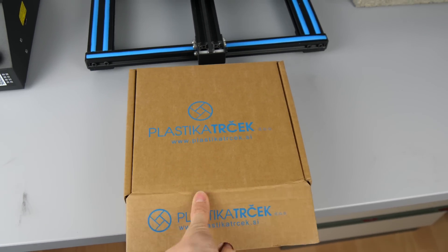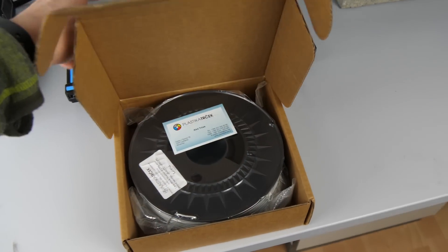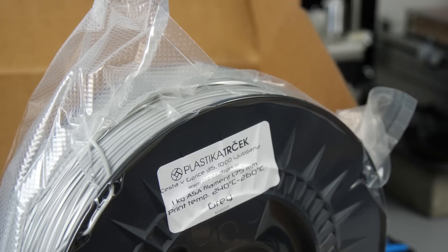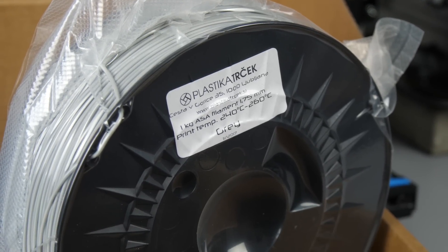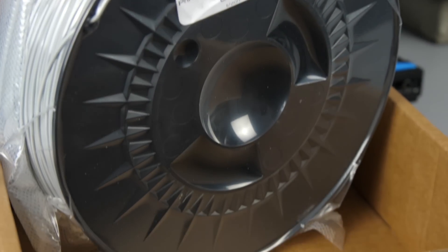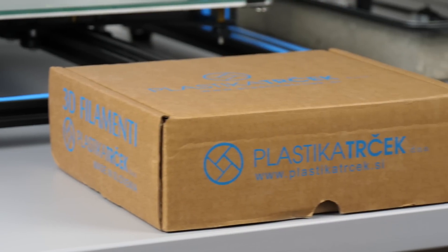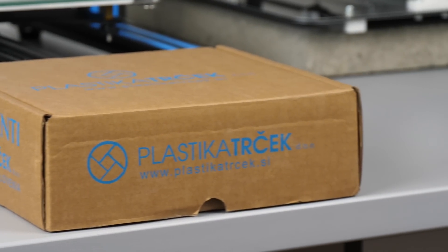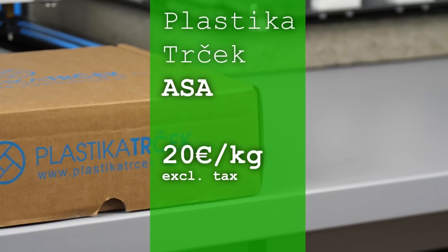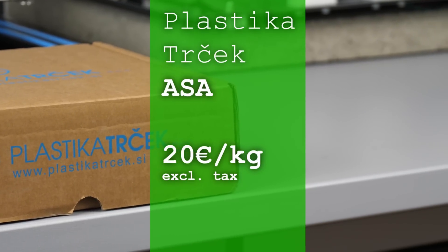Plastika Trecek, I'm quite sure that I didn't pronounce that correctly, a Slovenian filament manufacturer contacted me a while ago and asked me if I wanted to test one of their materials. Since I never worked with ASA filament at that point, they shipped me a roll of theirs. It comes at a low price of around 20€ per kilogram of material.